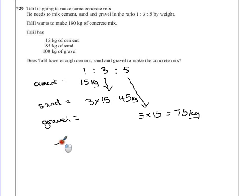But what's the total? 15 add 45, add 75. Put all of those together and we get 60 plus 75 is 135 kilograms.